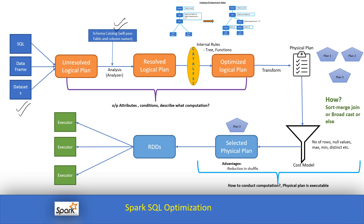In the next phase, there is a catalog schema — the Hive metastore — where all metadata information is stored. Spark checks whether the tables referenced in the query, such as customer or department, actually exist. The analyzer looks at the Hive metastore, identifies the tables and columns, and sends the result to the next phase as a resolved logical plan. If the tables cannot be resolved, the plan remains unresolved.